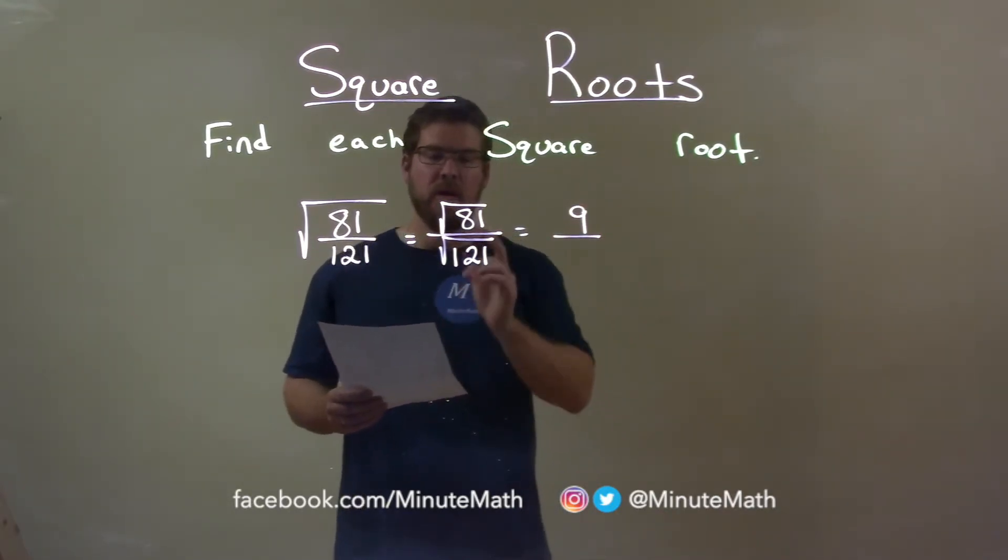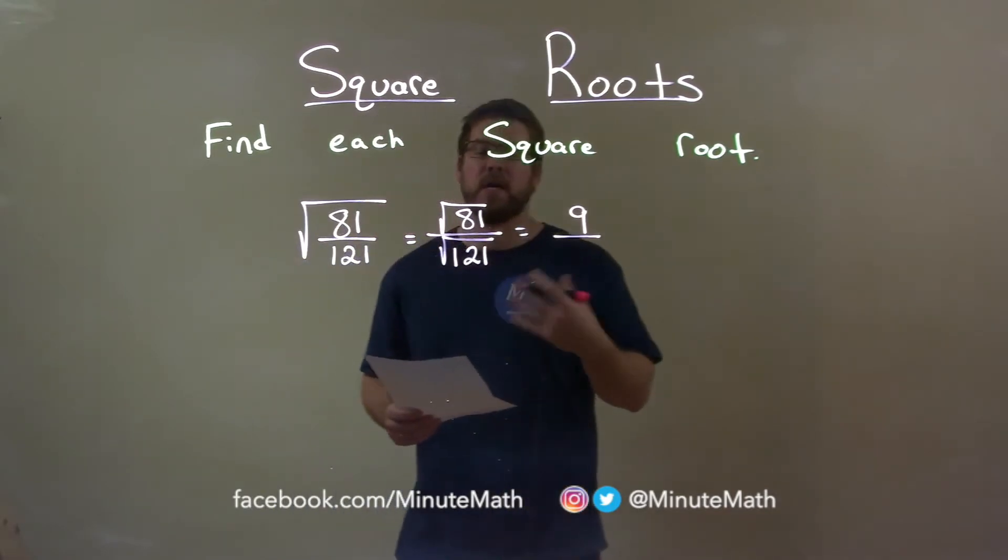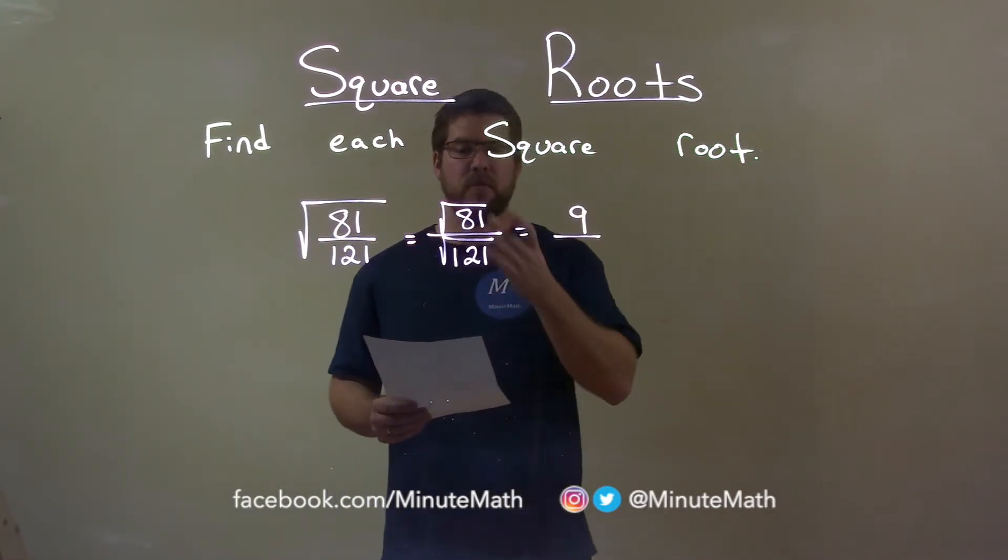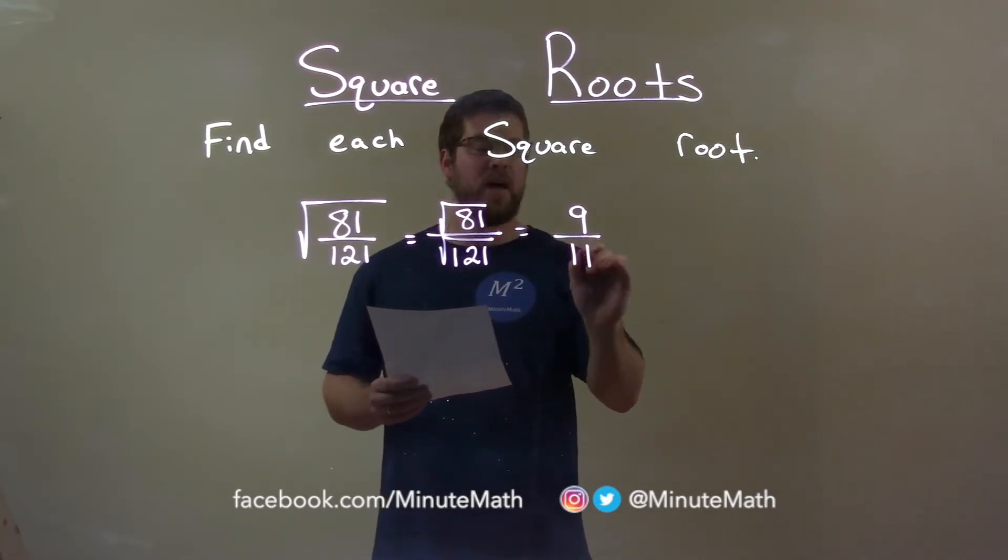Now the denominator. Same question: what number times itself is 121? That number is 11, so the square root of 121 is 11.